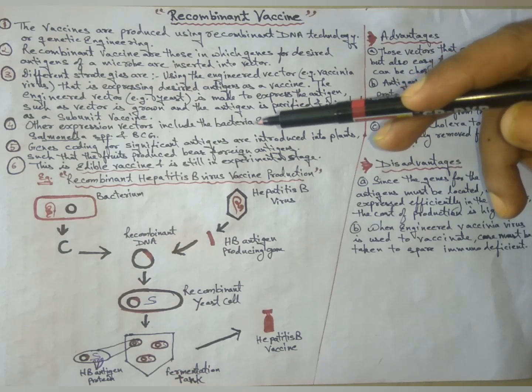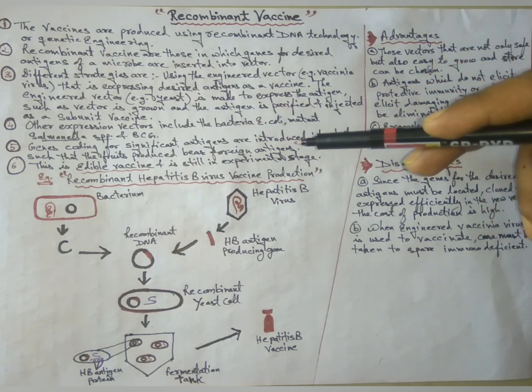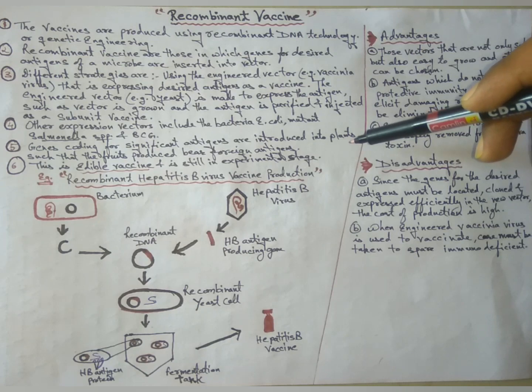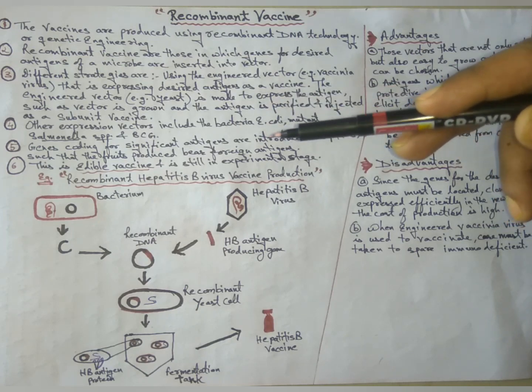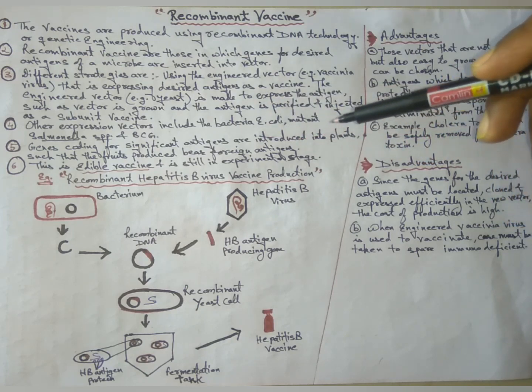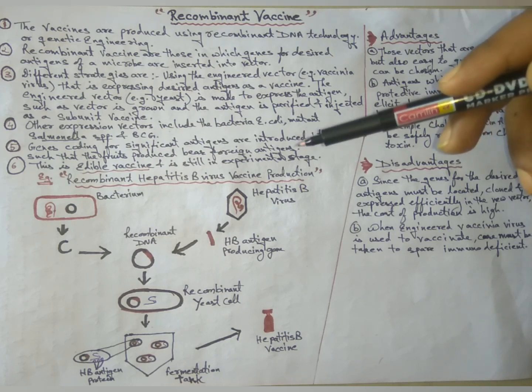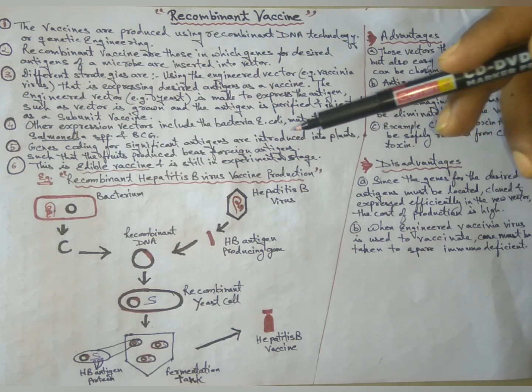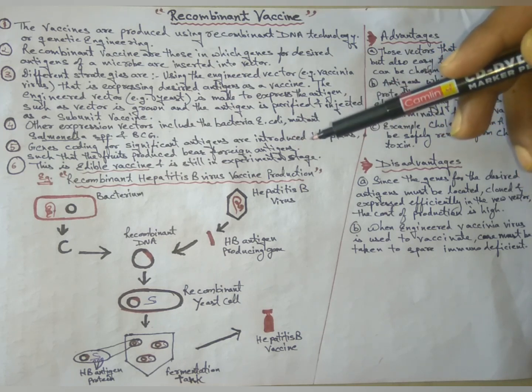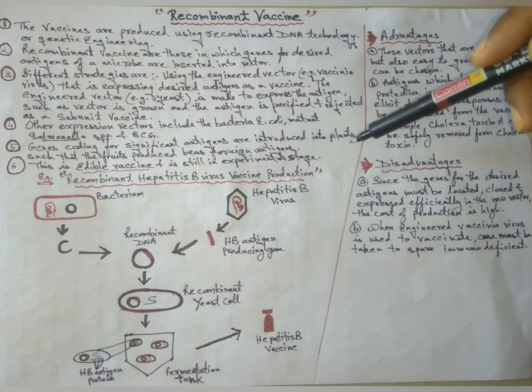Genes encoding for significant antigens are introduced into plants such that the fruit produced bears foreign antigens. This is an edible vaccine and is still in experimental stage.